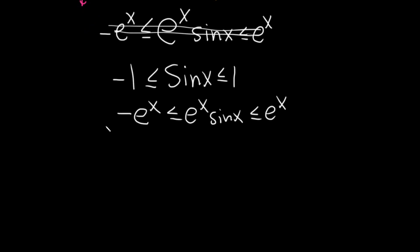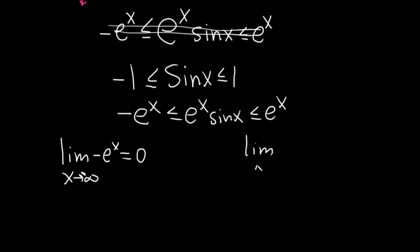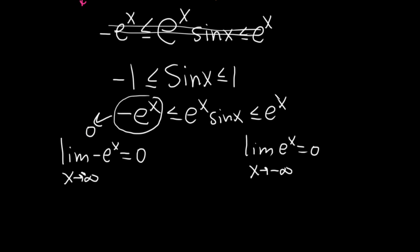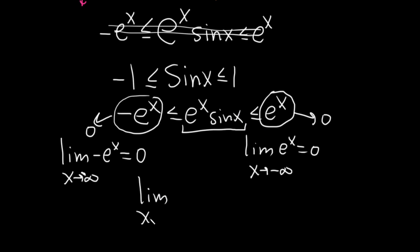Now we just have to write some things down. Note that the limit as x approaches negative infinity of negative e to the x equals zero, because we established that e to the x approaches zero as x approaches negative infinity, and having the negative doesn't affect that. Likewise, the limit as x approaches negative infinity of e to the x is also zero. So as x approaches negative infinity, the lower bound approaches zero and the upper bound approaches zero. Because e to the x times sine x is trapped — squeezed — between these two functions, it also approaches zero as x approaches negative infinity.